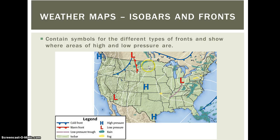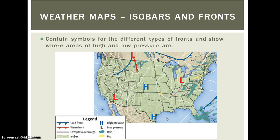Pay attention to the H's and L's — those stand for high pressure and low pressure. High pressure is where air is moving downward, and in low pressure areas the air is rising. Winds always travel from areas of high pressure to low pressure. So here's the high pressure, and you'll have winds traveling toward the low pressure areas. That gives you an idea of which way the air is going to blow if you're in the path of those different fronts and pressure systems.